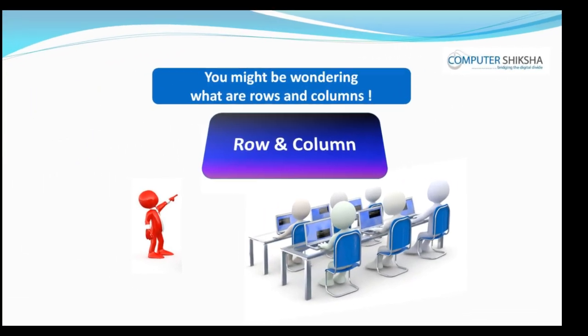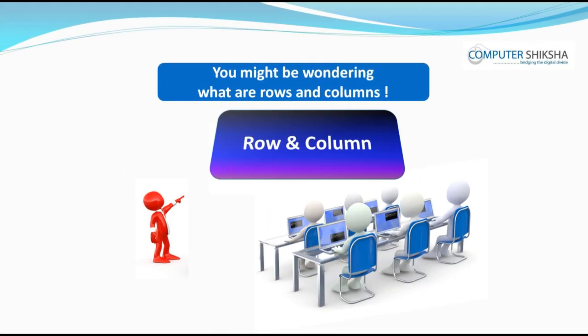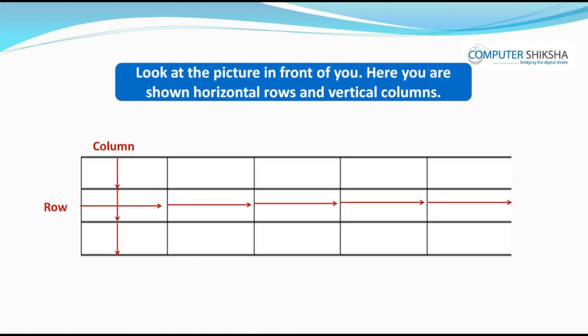You might be wondering what are rows and columns. Look at the picture in front of you. Here you are shown horizontal rows and vertical columns. The boxes which go from left to right are called rows and these are horizontal. The boxes which go from up to down are the columns and these are called vertical.